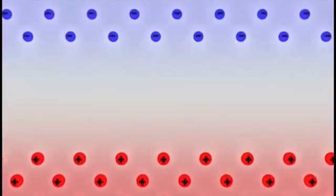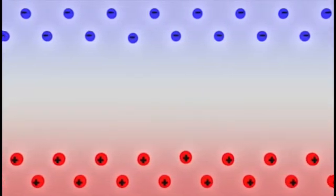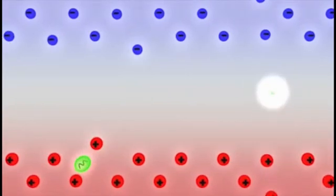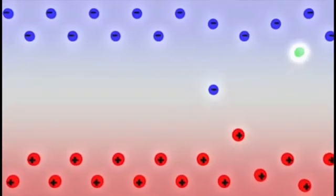Negatively charged electrons move in one direction of the electrical field. Positively charged holes move in the opposite direction. Where electrons and holes meet, energy is released as photons, the elementary particles of light.